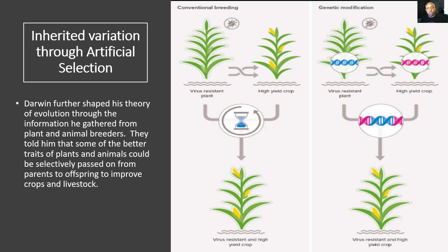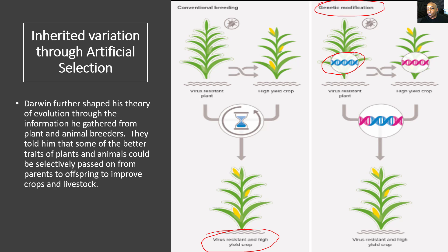Now let's look at inherited variation through artificial selection. Darwin further shaped his theory of evolution through information gathered from plant and animal breeders, who told him that better traits of plants and animals could be selectively passed on from parents to offspring to improve crops and livestock. In the conventional method, they crossed a virus-resistant plant with a high-yield crop to get a virus-resistant and high-yield crop. With today's technology, we can use genetic modification — taking the DNA from one plant and crossing it with the genetic code and DNA from another plant, such as crossing a virus-resistant plant's DNA with a high-yield crop's DNA.